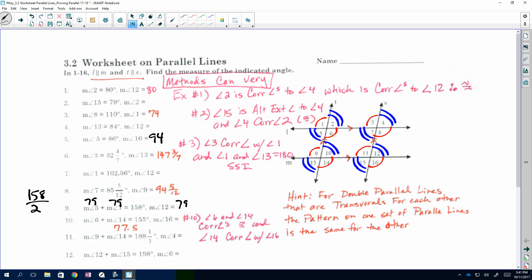And then, I gave you some hints for 10. This is angle 6 and 14 are corresponding angles. So, if I look at 6 and 14, they have the same single arc. So, therefore, they're congruent. And it says 14 corresponds with 16. Yeah, because it has one arc, too. So, you could find that measure by just basically subtracting from 180. And then, you have the measure of angle 16. The other thing is whenever you have double parallel lines that are transversal for each other, the pattern of one set of the parallels is the same for the other. So, that's why drawing this first will help you find the missing angle.